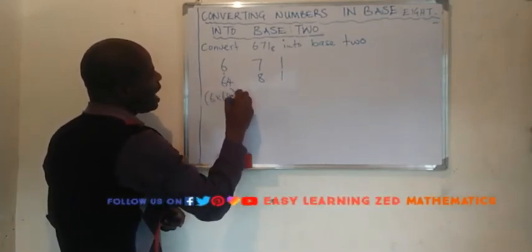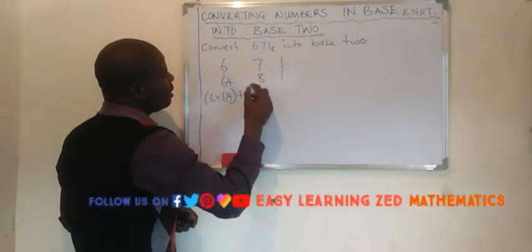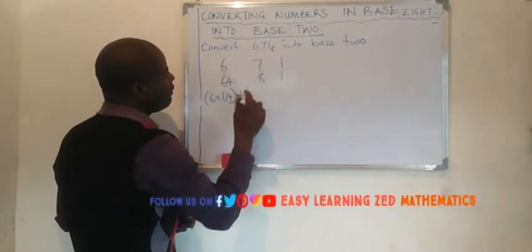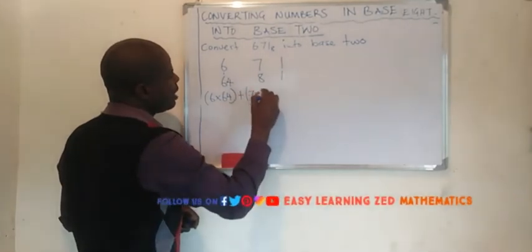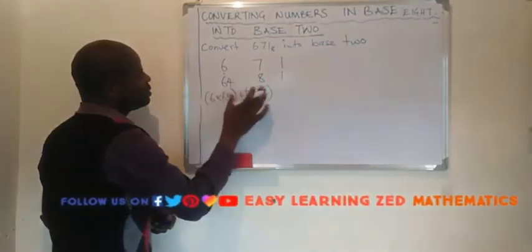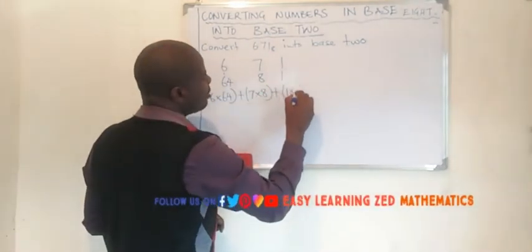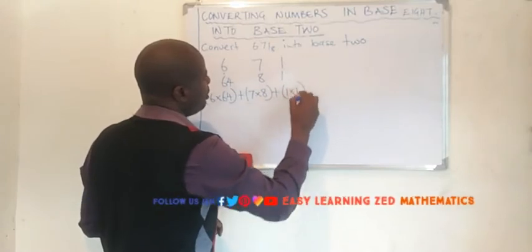Then we add the product of these two, we add 7 by 8. Then the product of these two also being added to 1 by 1.